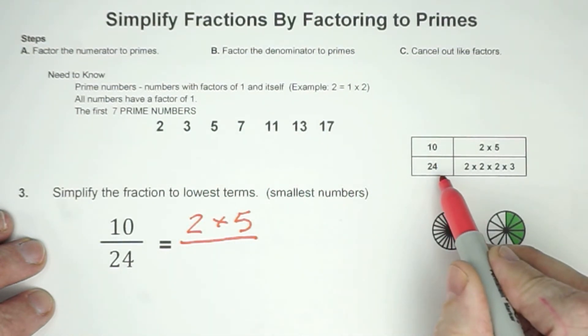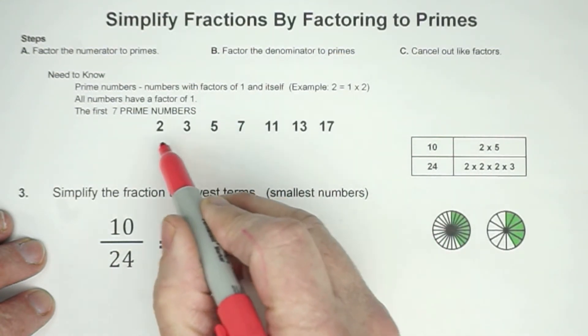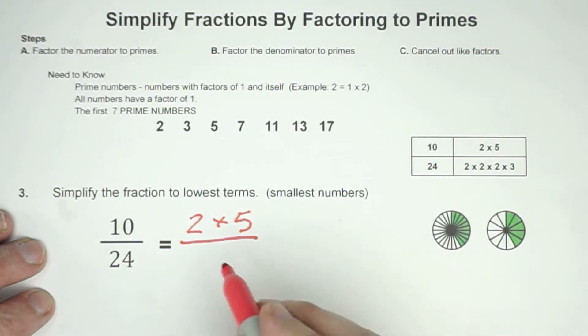24 would be 2 times 2 is 4, right? Times 2 is 8. 8 times 3 is 24. Notice we're using all 2s and 3s. Those are all prime numbers. And if you're good at multiplication, you can go pretty fast with this. I kind of like this way of doing it.